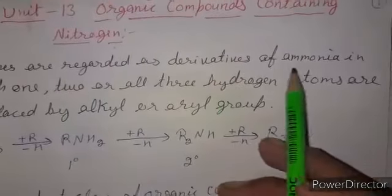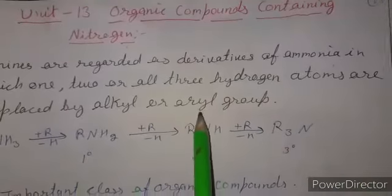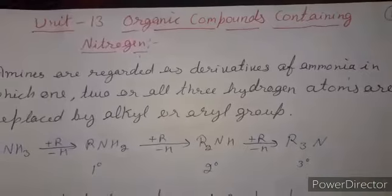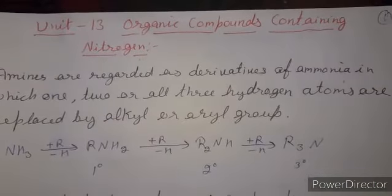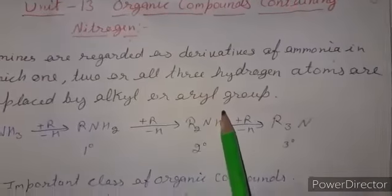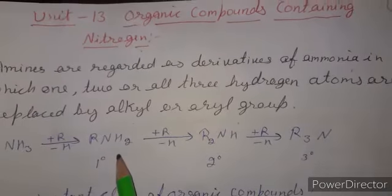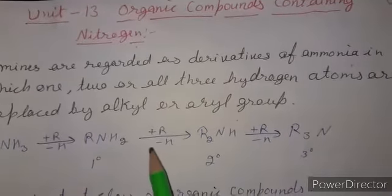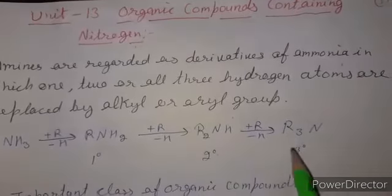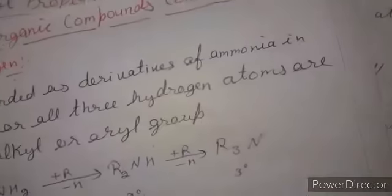Amines are regarded as derivatives of ammonia in which one, two, or all three hydrogen atoms are replaced by alkyl or aryl groups. When we replace one hydrogen with an alkyl group we obtain a primary amine. When we replace another hydrogen we obtain a secondary amine, and when we replace the third hydrogen we obtain a tertiary amine.